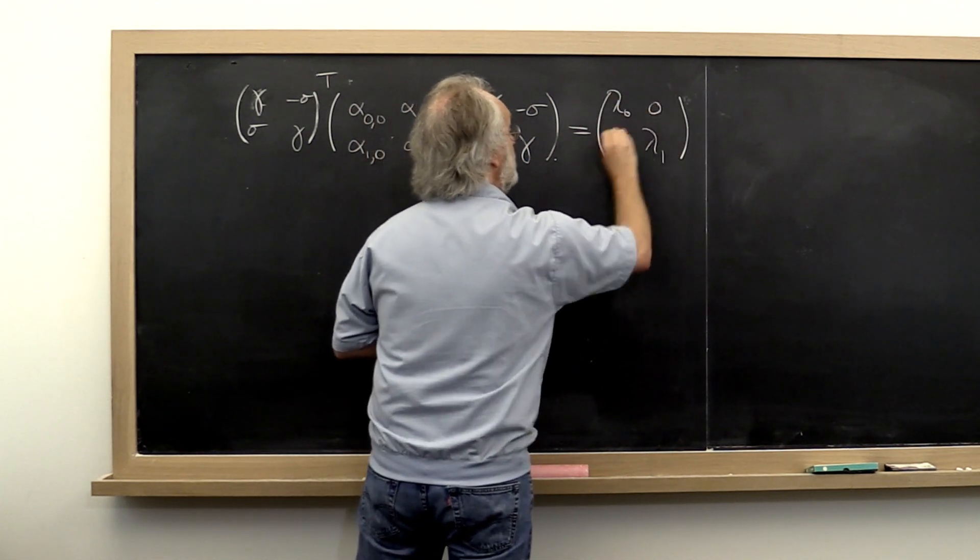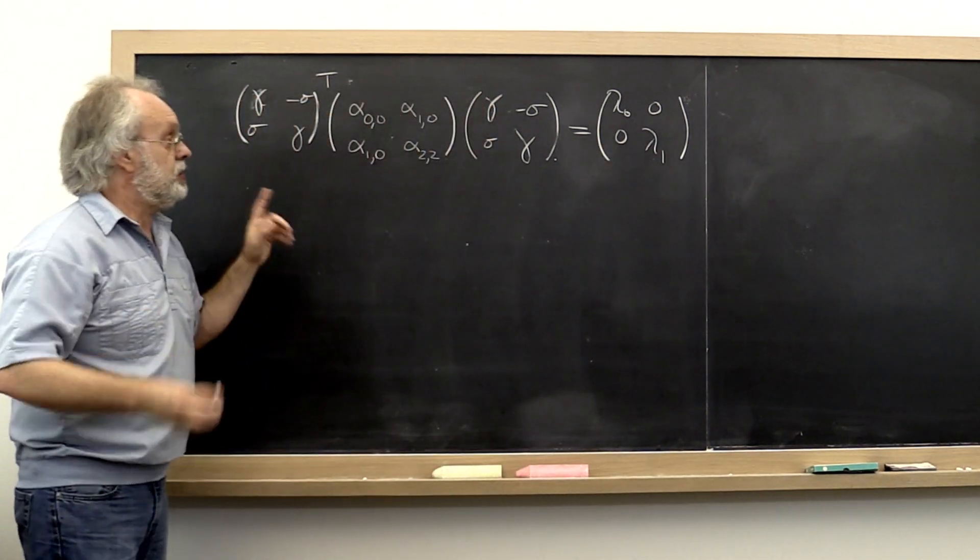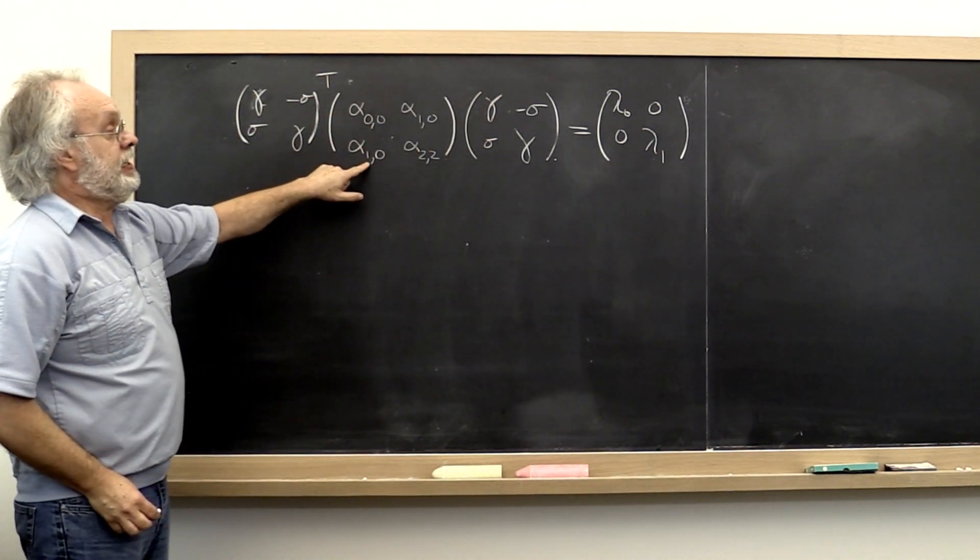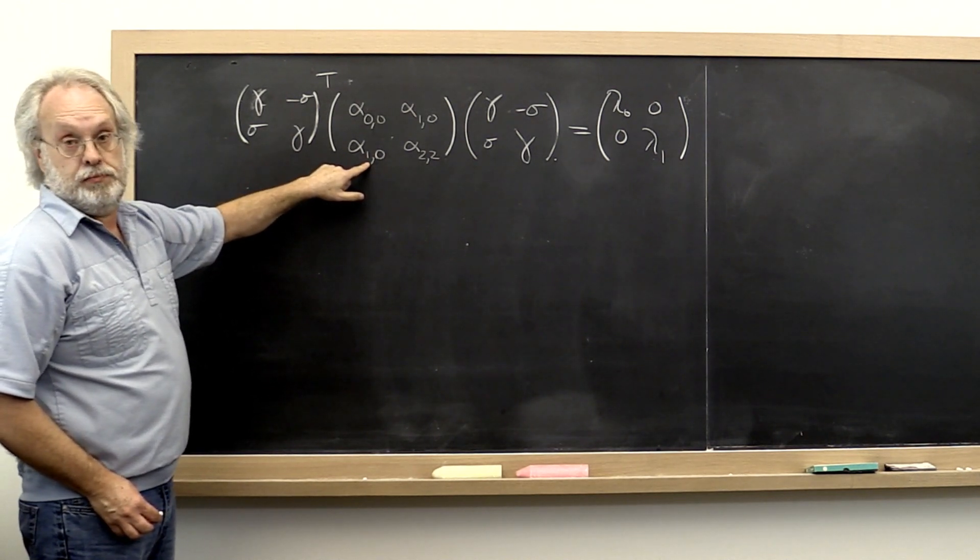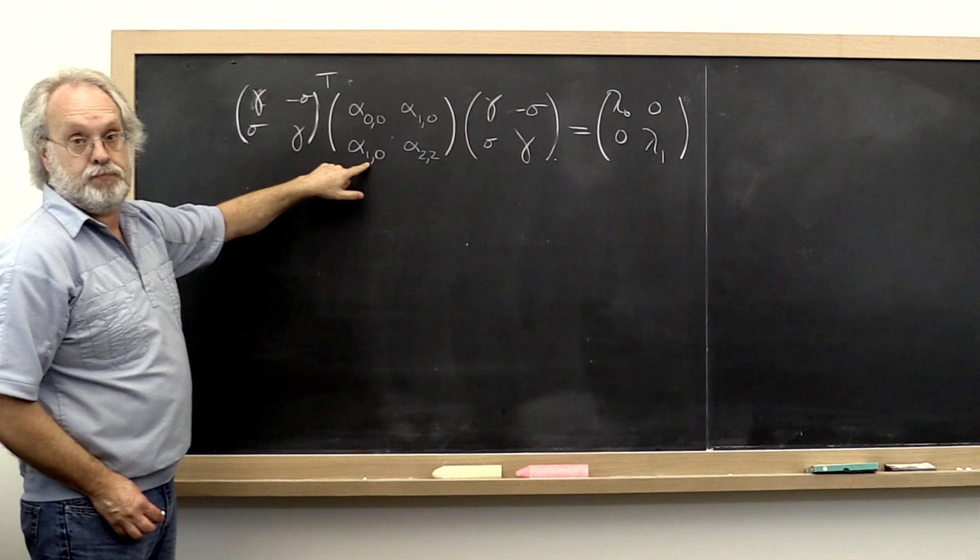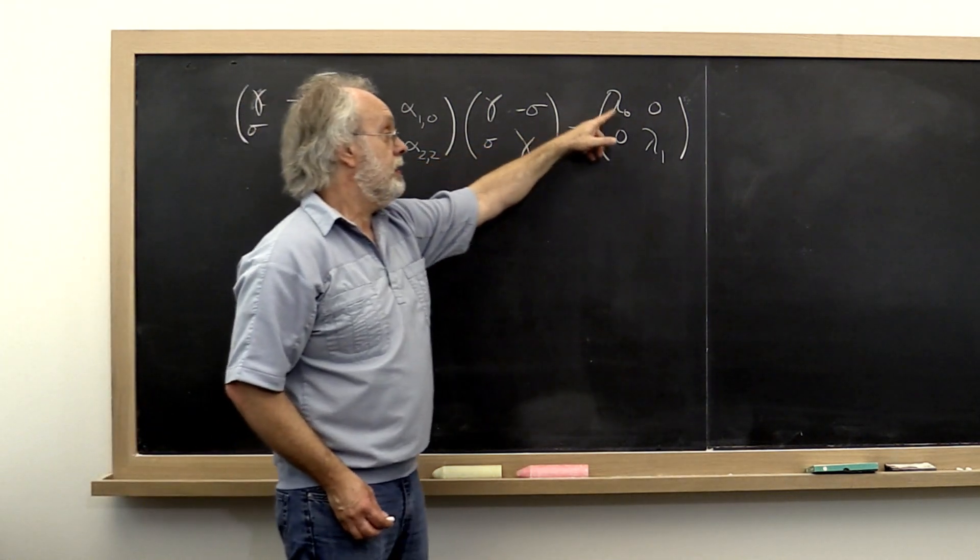Now, obviously what this does is it computes the spectral decomposition of a two by two symmetric matrix. And we know that that has to be diagonal.